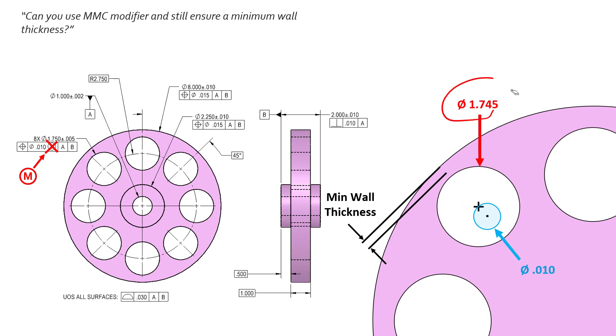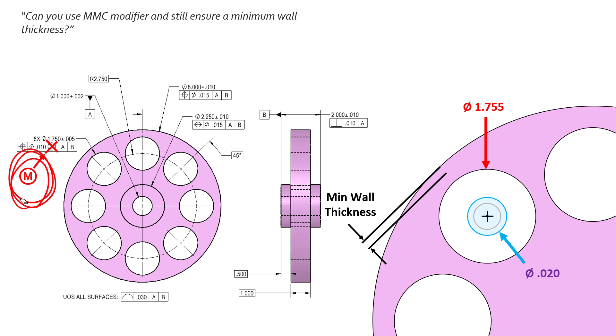So if this 10 thousandths is all we get in position and we're at our MMC still, we see that we have a thicker wall in its worst case scenario when it measures that MMC. Now let's step back and go to LMC size. This hole measures at its LMC, the largest size for an internal feature is the LMC. Well, we've deviated away from MMC now by 10 thousandths and we get 10 thousandths positional tolerance to add back to our original position. So we get 20 thousandths total: 10 of the original, 10 bonus. 20 thousandths total we get to deviate even further, yet we grew in size. So you see, this minimum wall thickness is really narrow now.